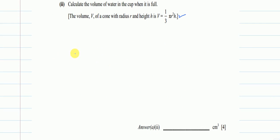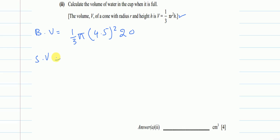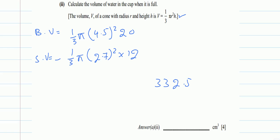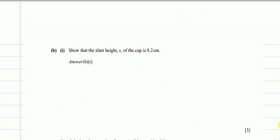The volume of the big cone equals (1/3)π × (4.5)² × 20, minus the volume of the small cone which is (1/3)π × (2.7)² × 12. Calculating this difference gives approximately 333 to three significant figures.